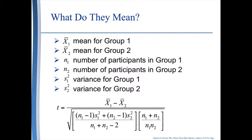That whole quantity is divided by the number in group 1 plus the number in group 2 minus 2 — and all that stuff multiplied by the number of observations in group 1 and the number of observations in group 2, divided by the number of observations in group 1 multiplied by the number of observations in group 2.